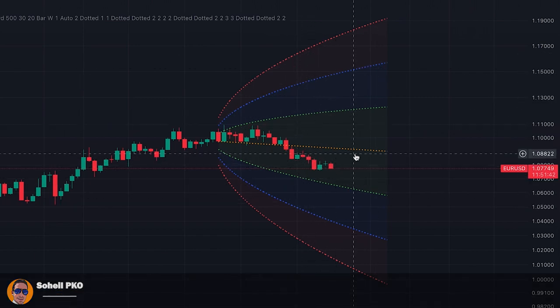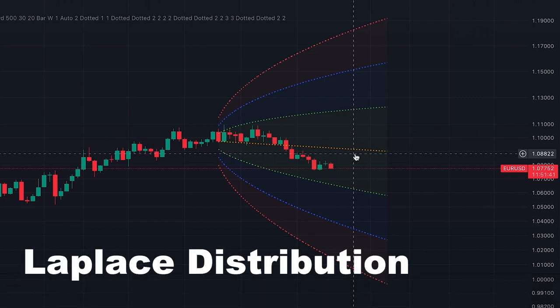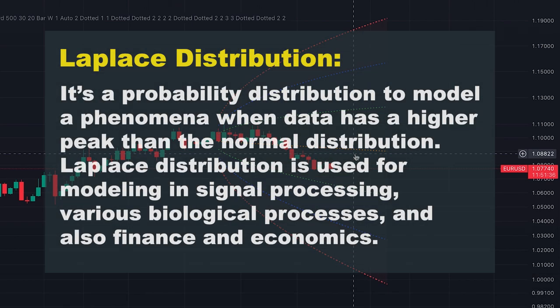This indicator is built based on Laplace distribution. In statistics, the Laplace distribution is a probability distribution used to model phenomena when data has a higher peak than the normal distribution. It's also called the double exponential distribution because it can be thought of as two exponential distributions. It's used for modeling in signal processing, various biological processes, and also finance and economics.